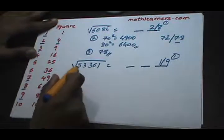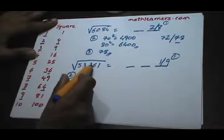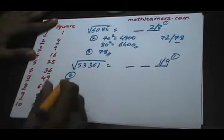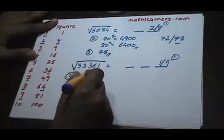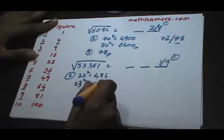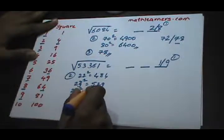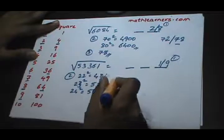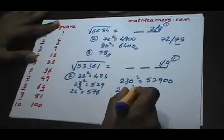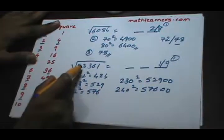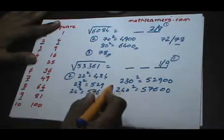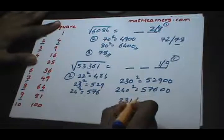Second step: find between which two perfect squares this number lies. We need to know squares from 1 to 25. Square of 22 is 484, square of 23 is 529, square of 24 is 576. So 230 squared is 52900 and 240 squared is 57600. Therefore 53361 lies between 52900 and 57600, and the candidates are 231 or 239.